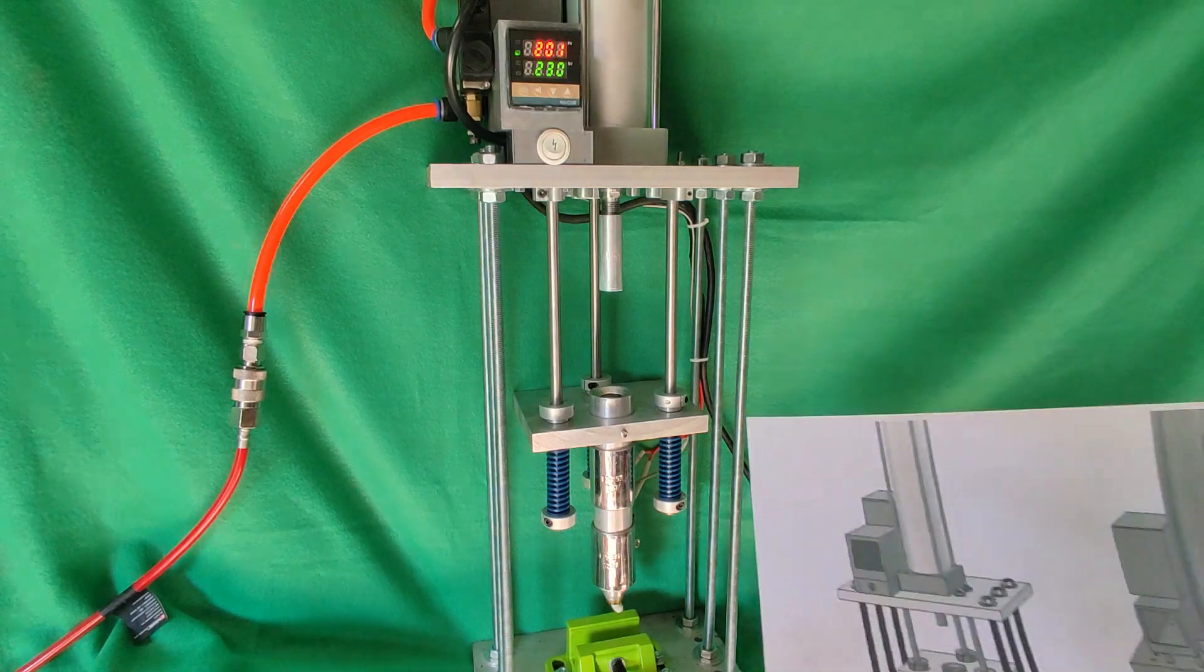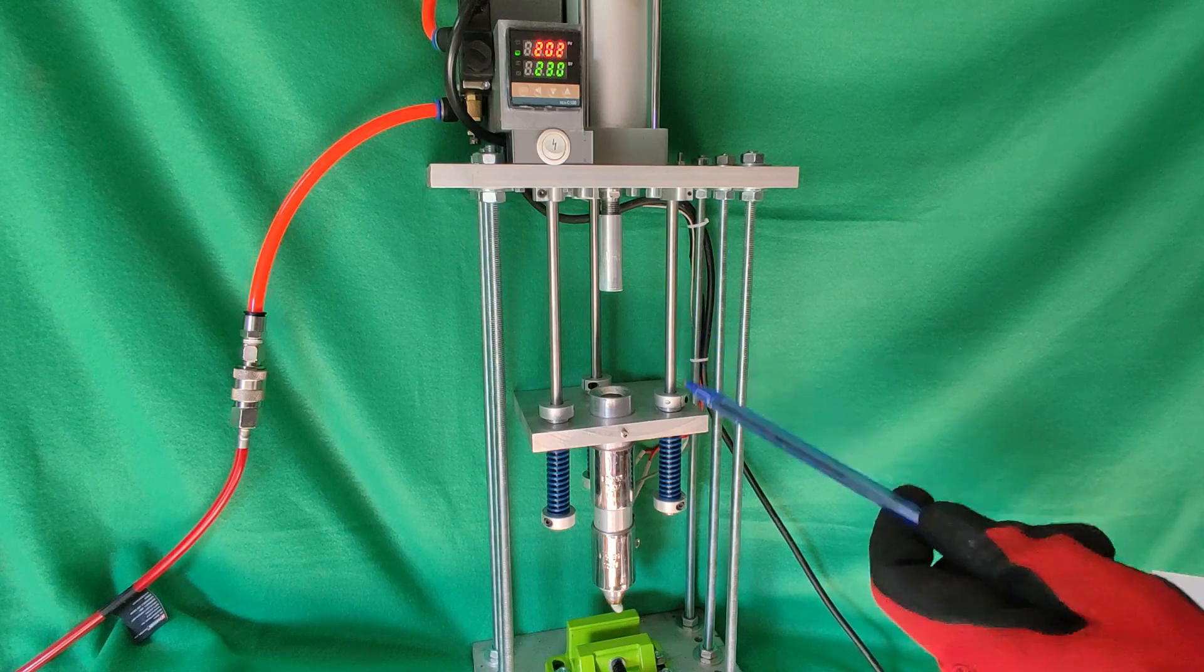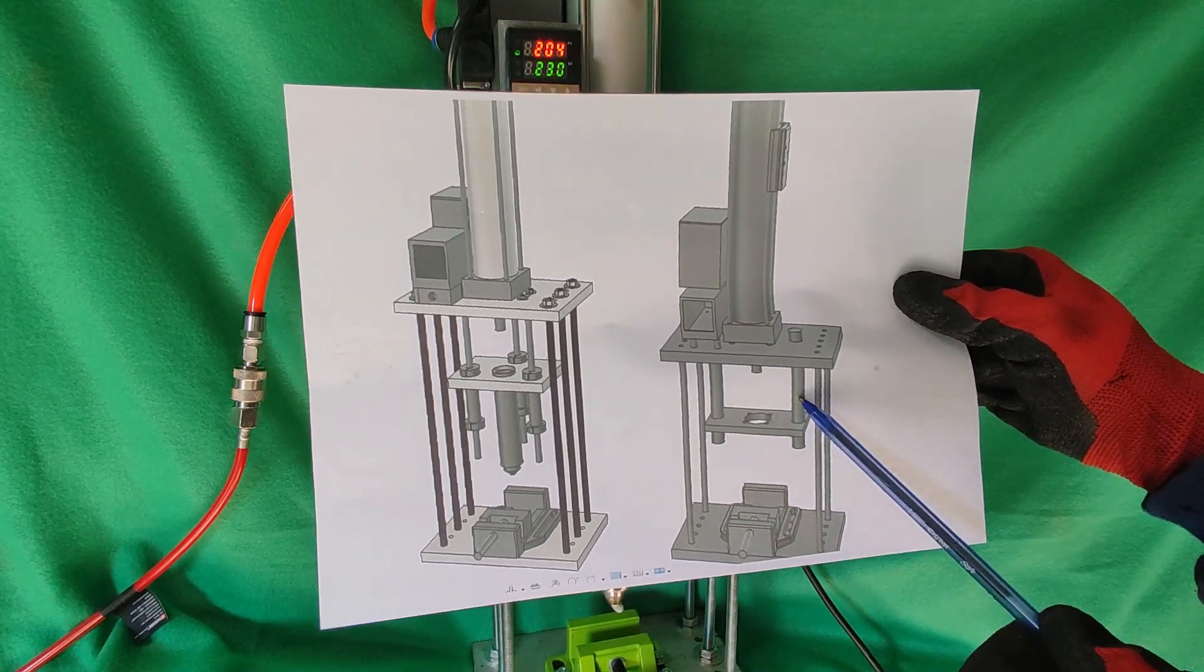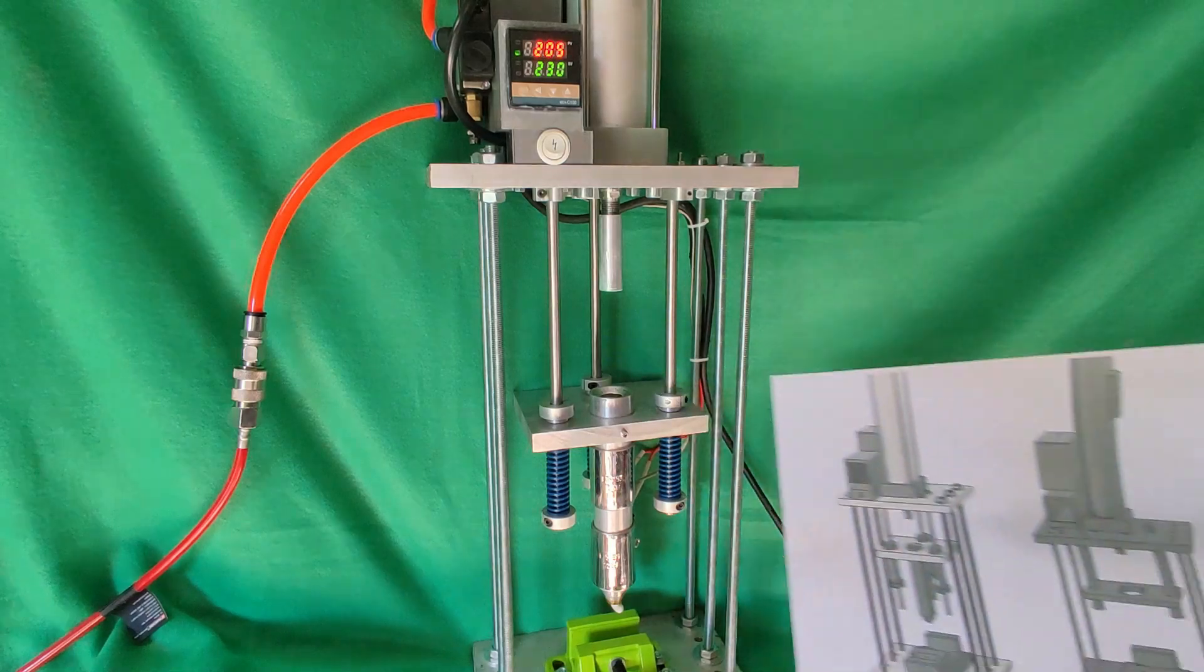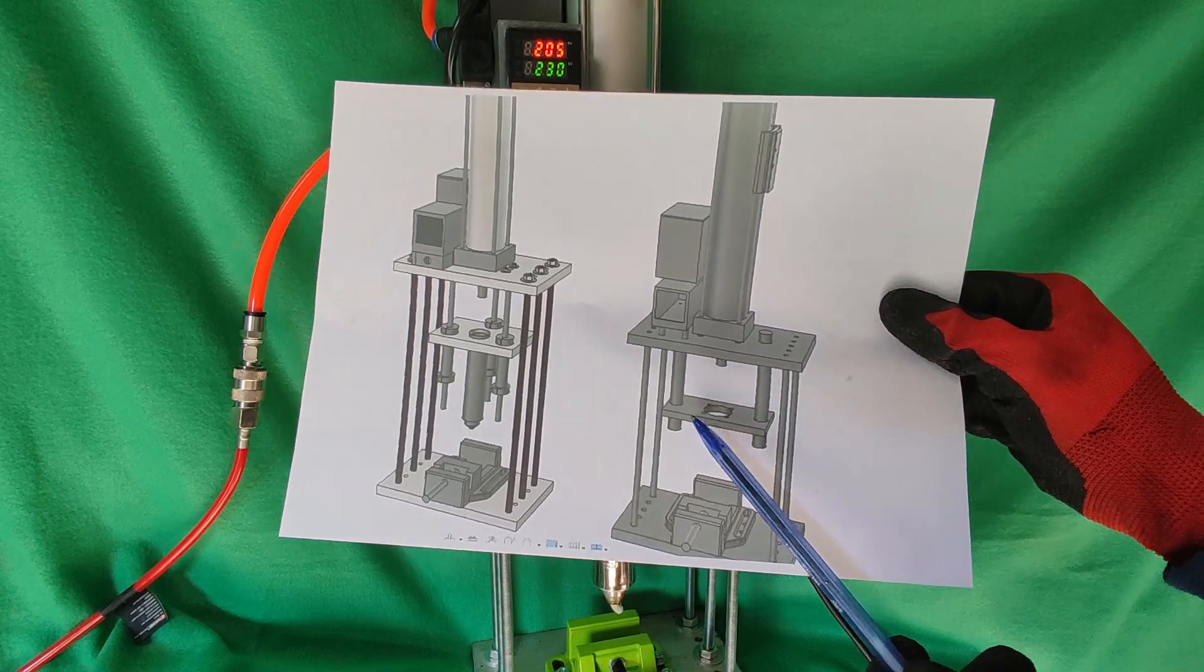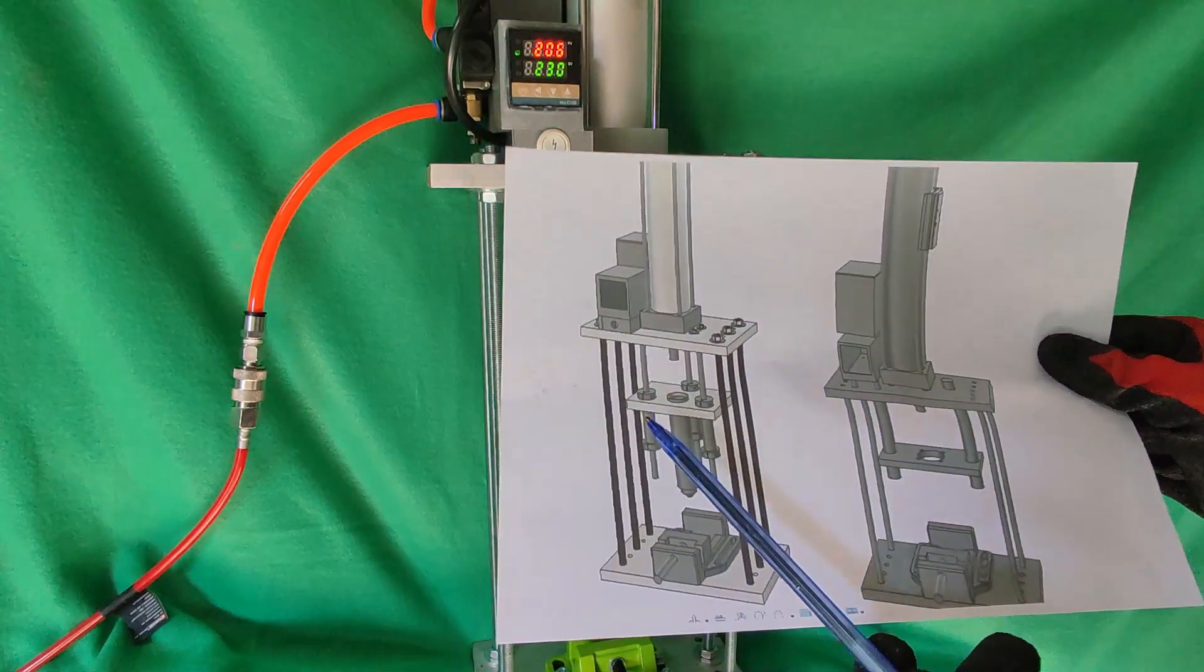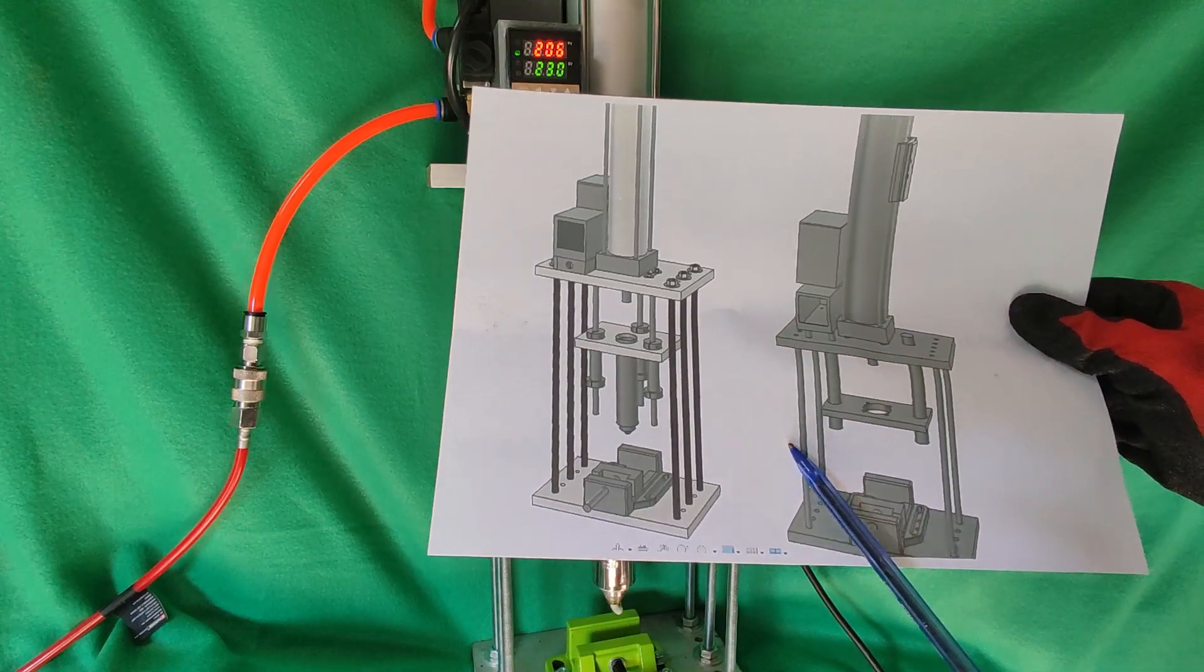I'm making a small video presentation of my new version of pneumatic injection molding machine. The previous design was using two guiding rods, here there are three, so it's much smoother. This part here doesn't go on the side, so it's much better. Same design here, then I added two more rods on the side.